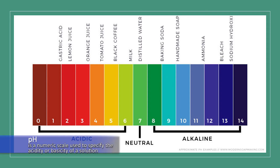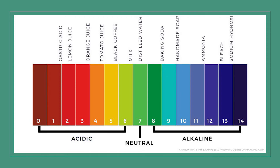pH is a measurement of the acidic or basic quality of water. The pH scale ranges from a value of 0, very acidic, to 14, very basic, with 7 being neutral. The pH of natural water is usually between 6.5 and 8.2. Most aquatic organisms are adapted to a specific pH level and may die if the pH changes even slightly. pH can be affected by industrial waste, agricultural runoff, or drainage from improperly run mining operations.